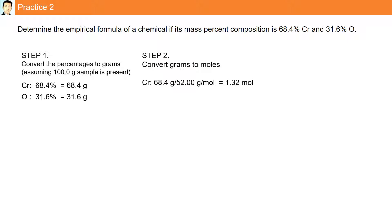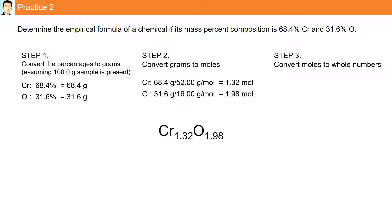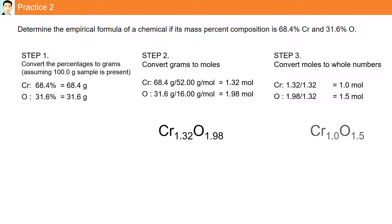Chromium: 68.4 grams divided by the molar mass of chromium, 52 grams, gives 1.32 moles. Oxygen: 31.6 grams divided by 16, the molar mass of oxygen, gives 1.98 moles. Our formula is Cr1.32O1.98. Step 3 is to convert moles to whole numbers by dividing by the smallest mole value. 1.32 divided by 1.32 is 1 mole of chromium. 1.98 divided by 1.32 gives 1.5. Our new formula is Cr1O1.5.